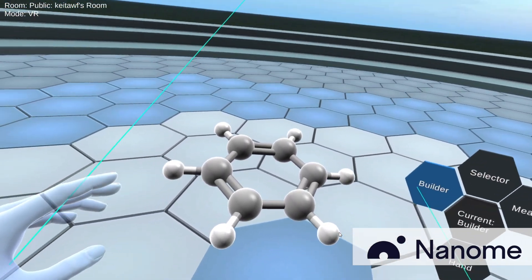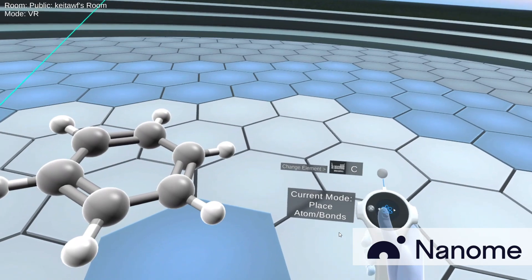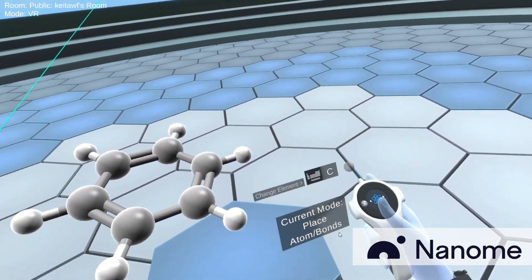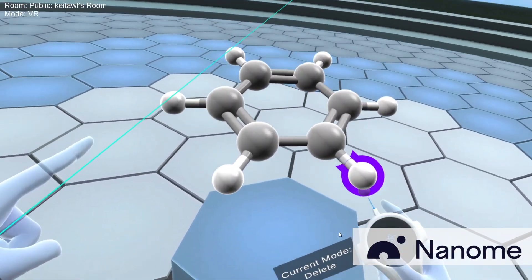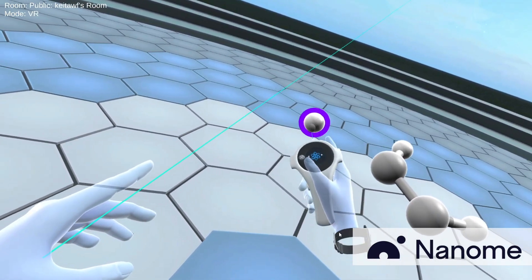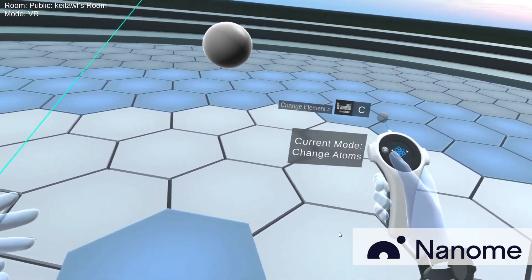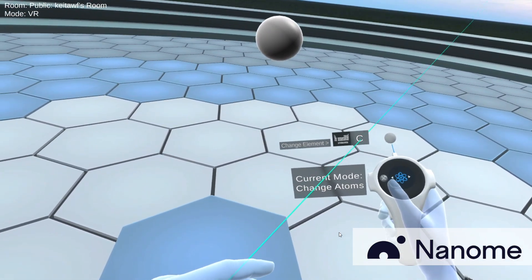But it's to basically start off with a benzene ring, switch to your builder tool using the B button, that's how you pull up this menu, and pretty much delete all the other atoms from the benzene to start off with a single carbon. And you can actually use the builder tool to change this into any atom type.